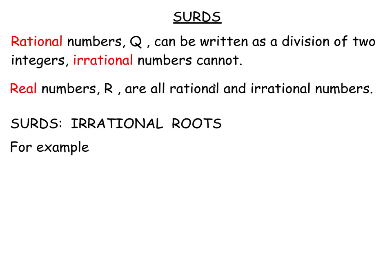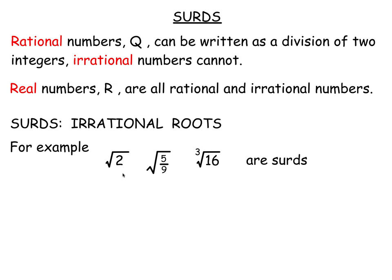Other places you'll have met irrational numbers is in Pythagoras' theorem — most roots are irrational, not all, most. So for example, square root 2 is irrational: it can't be written as a fraction, can't be written exactly as a decimal, it can only be approximated. Similarly root 5 ninths, cube root 16 and so on.